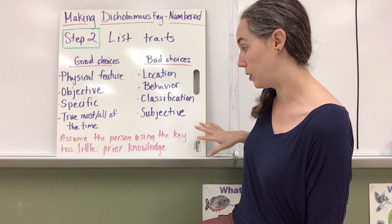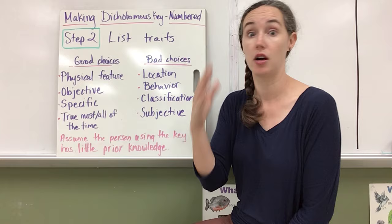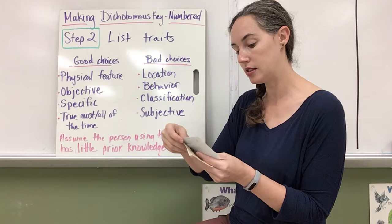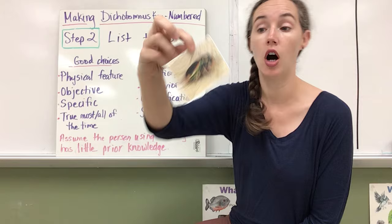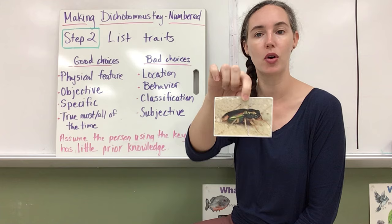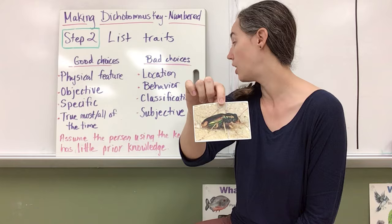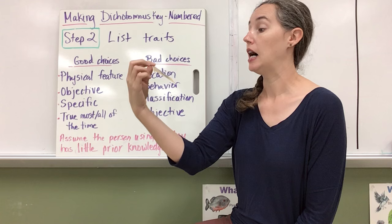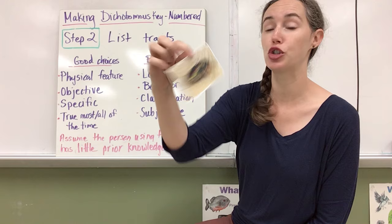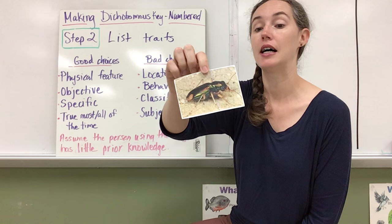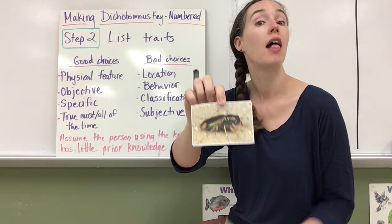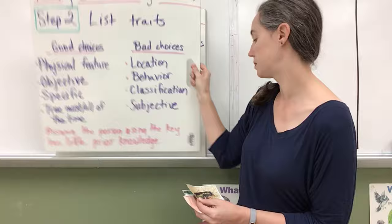The key is to assume that whoever is using the key has very little prior knowledge beyond what's right in front of their face. So actually, let's just show an example here. This Carolina tiger beetle, you would not say it is on a stone path. That's location, because somebody might come across this bug and they're not on a stone path. Some people may find this very lovely, like me, and some people may find it very ugly and scary. That's subjective. We can't use that. It has pretty large jaws, but maybe some of those other ones do too. So large jaws isn't great. But if you say jaws that are as long as the rest of its head, that is objective.